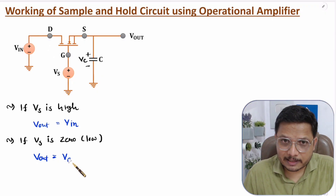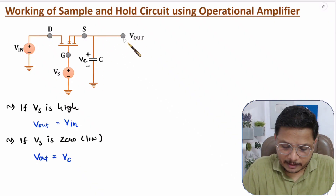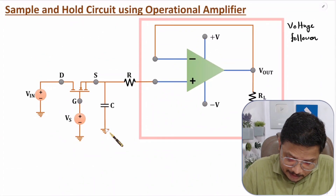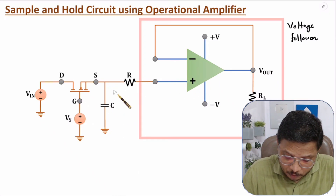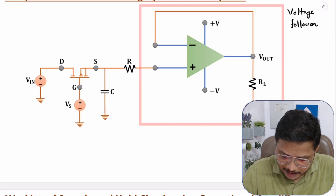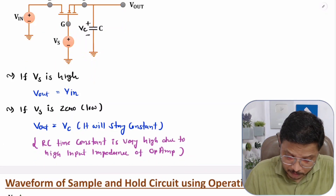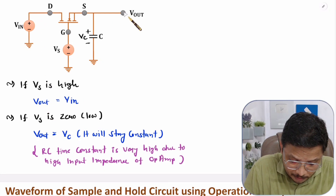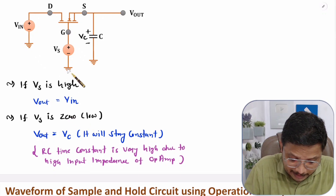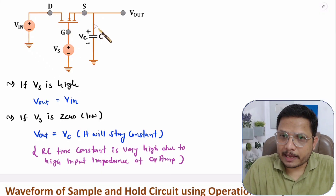The capacitor voltage VC cannot get discharged because the RC time constant of the discharging path is very high. The discharging path goes through the op-amp, whose input impedance is very high, so the RC time constant is very high and the capacitor voltage VC stays constant. So when VS is high, V_in approaches V_out; when VS is zero, the output voltage equals the capacitor voltage VC.